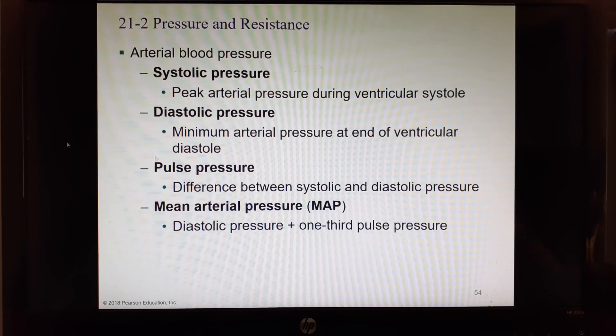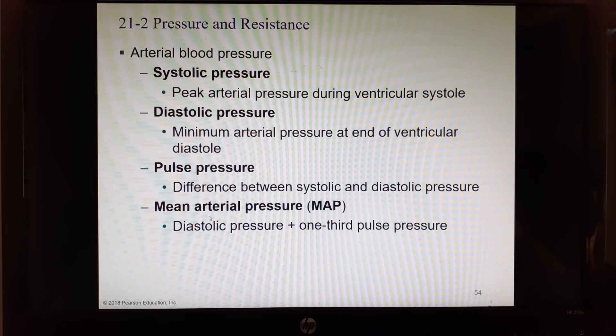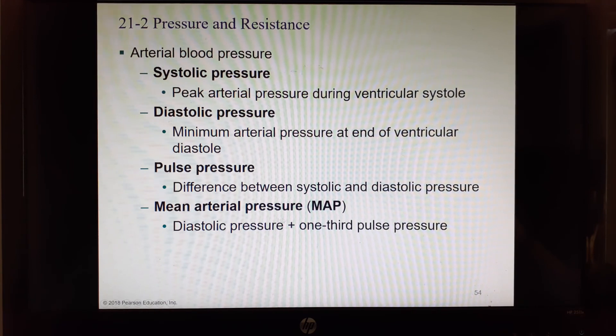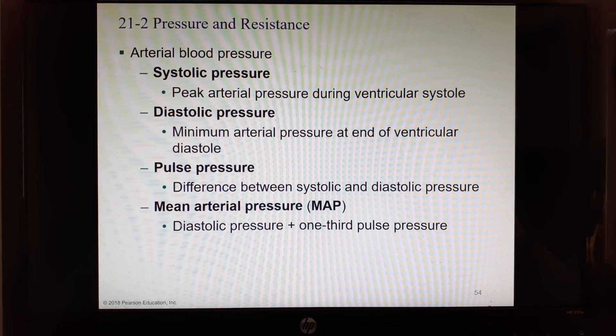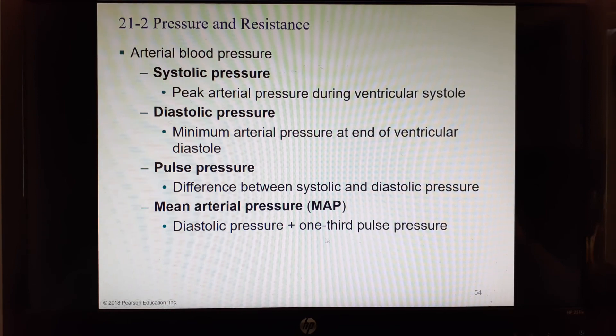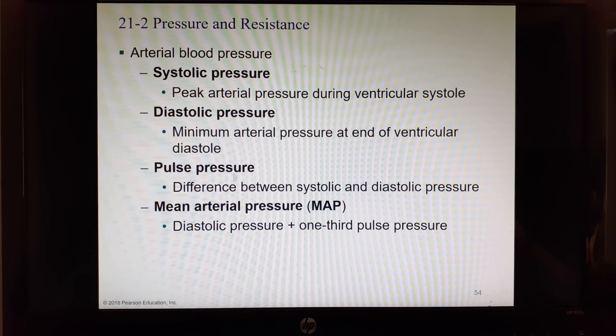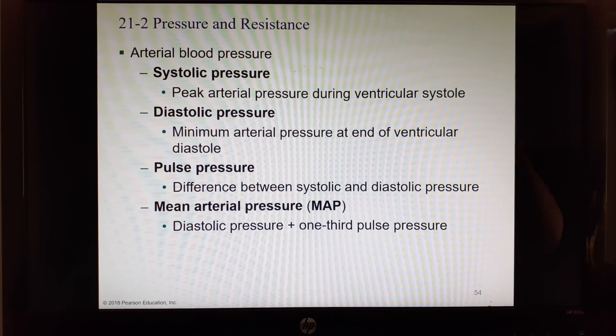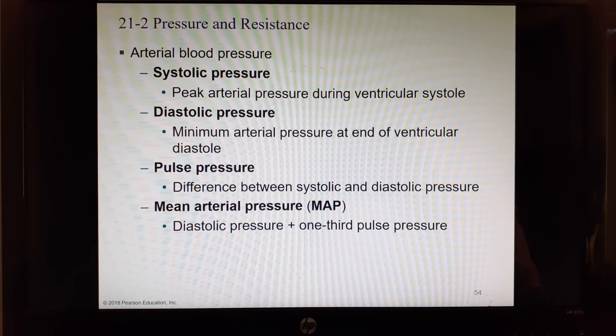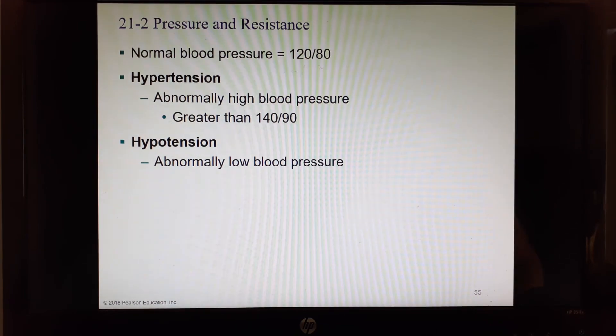And then there's this really weird one called your mean arterial pressure. Mean usually means average. So you take your lowest pressure, your diastolic, and you add one third of your pulse pressure. Our pulse pressure was 40. Our mean arterial pressure would be 80 plus a third of 40, which is a little more than 12. So like 92 point something would be our mean arterial pressure.